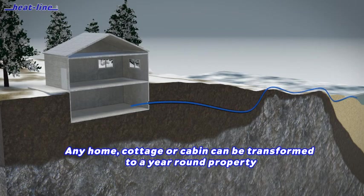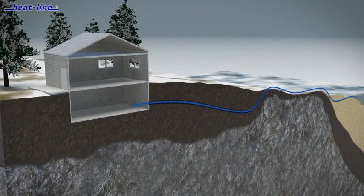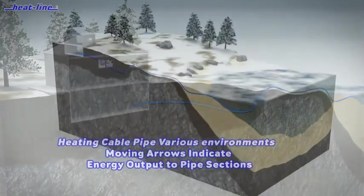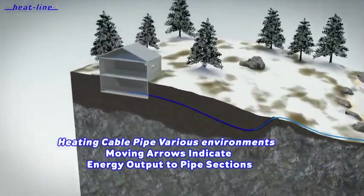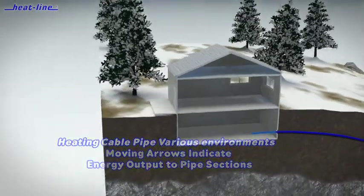It is important to understand how the Heat-Line system works. The heating cable has the ability to vary its power output in response to temperatures at every point along the pipe.